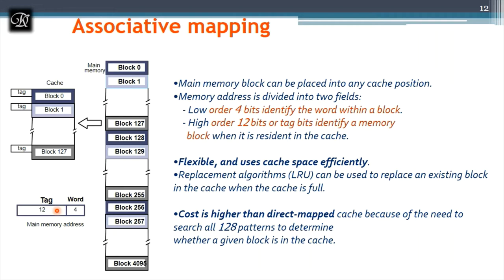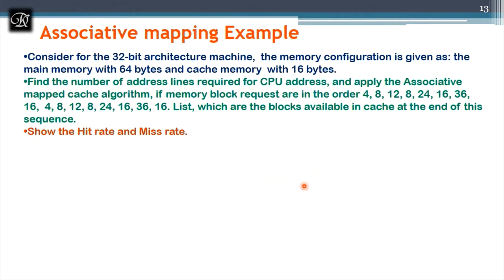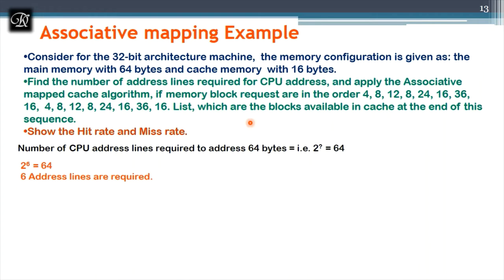In associative mapping, the 16-bit address is divided differently: 4 bits for word offset (standard), and the remaining 12 bits go directly to the tag bits. There is no separate block number field, since no modulus operation is used. The LRU algorithm decides which block to evict when the cache is full.